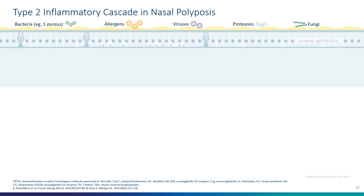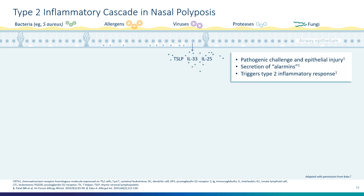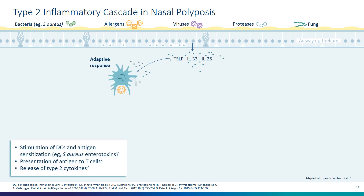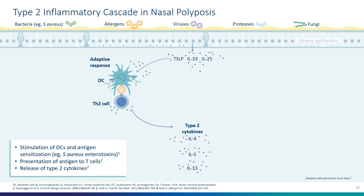Looking at the type 2 inflammatory cascade in nasal polyposis: bacteria, allergens, viruses, proteases, and fungi can mediate type 2 inflammation. In some instances, this is driven by alarmins secreted by the epithelium — specifically TSLP, IL-33, and IL-25. These can trigger the inflammatory response marked by type 2 inflammation. The alarmins can activate the adaptive response, inducing dendritic cell secretion and activation, mediating CD4-TH2 cell proliferation, cross-talking to B cells. The CD4-TH2 lymphocyte subset can secrete IL-4, IL-5, and IL-13.